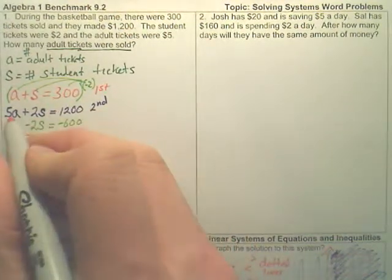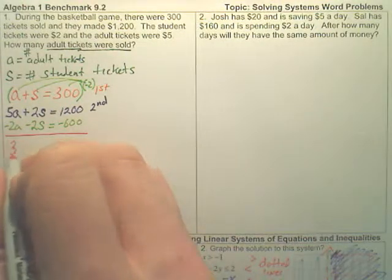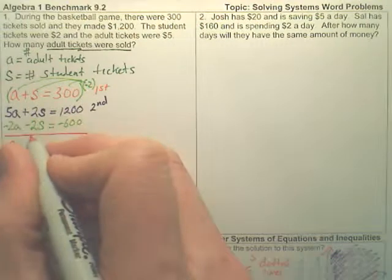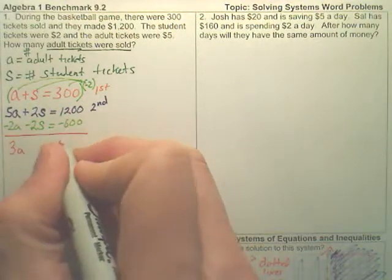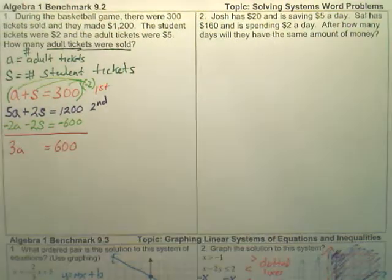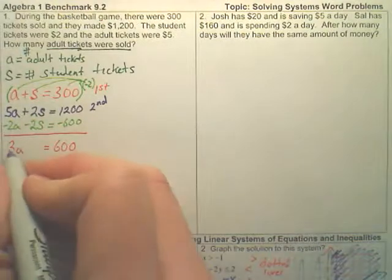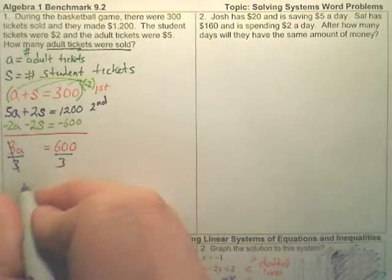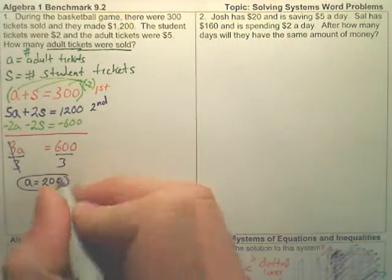Now, if I add straight down, what's 5A minus 2A? That is 3A's. Don't these cancel? And doesn't this, 1,200 minus 600, give you another 600? So how do you find A? Well, could I divide by 3 now?